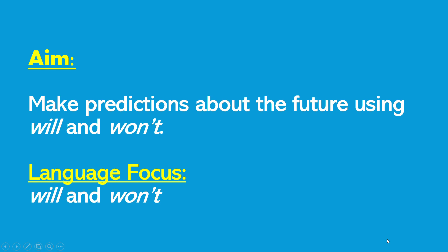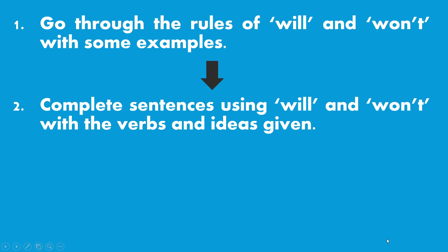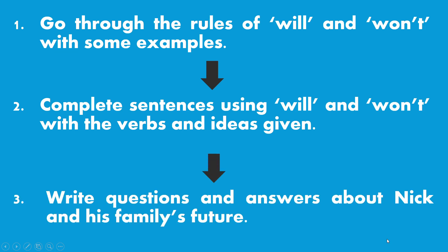As usual, before we proceed to our lesson today, let me explain to you the framework of our lesson. First, we shall go through the rules of 'will' and 'won't' with some examples. After that, we shall complete sentences using 'will' and 'won't' with the verbs and ideas given. Last but not least, we shall write questions and answers about Nick and his family's future.